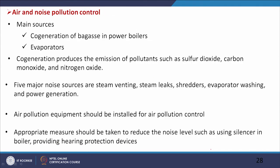For air and noise pollution control, the main sources of air pollution are the cogeneration of bagasse in power boilers and evaporators. Cogeneration produces emissions of SO2, CO, NOx, and CO2. The five major noise sources are steam venting, steam leaks, shredders, evaporator washing, and power generation. Air pollution control equipment should be installed, and noise reduction measures such as silencers on boilers and hearing protection devices for workers should be implemented.